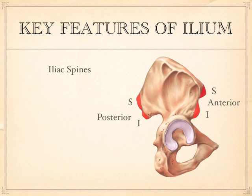Anterior superior iliac spine. Anterior inferior iliac spine. Posterior superior. And posterior inferior. You get four things in a pattern — just boom. So that tends to be one of the easier things to remember: these four spines.